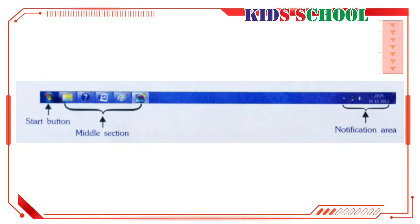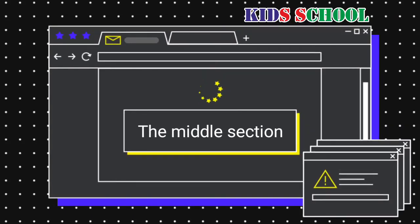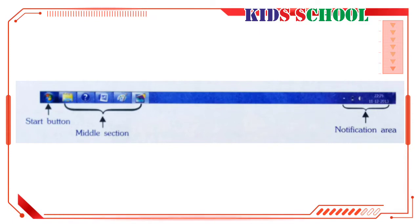When you click on the Start button, you will see the Start menu. The middle section shows all the programs, folders, and files you have opened. Whenever you open a program, folder, or file, Windows shows its icon button on the taskbar. In this picture, five programs are opened and each has its own icon button on the taskbar. The icon button of the active window — the window in which you are currently working — is highlighted.